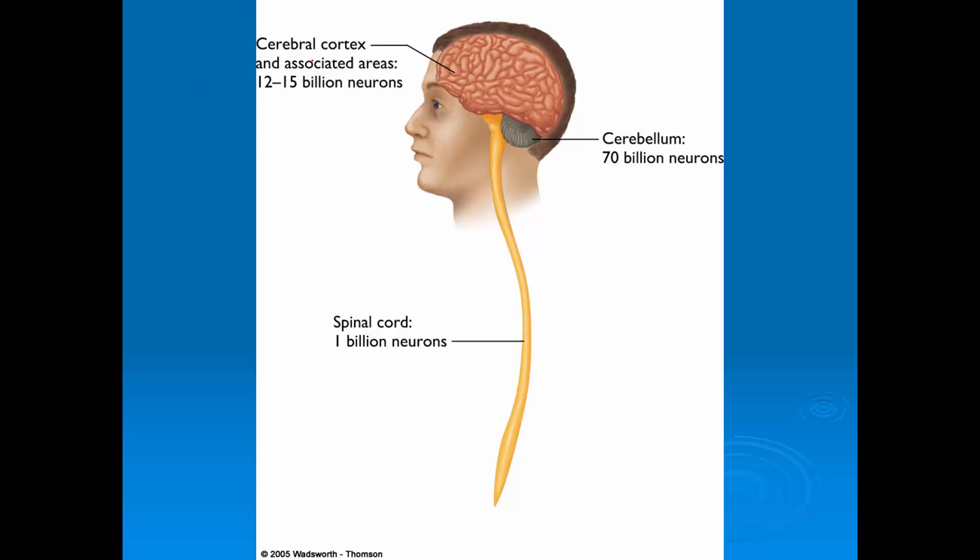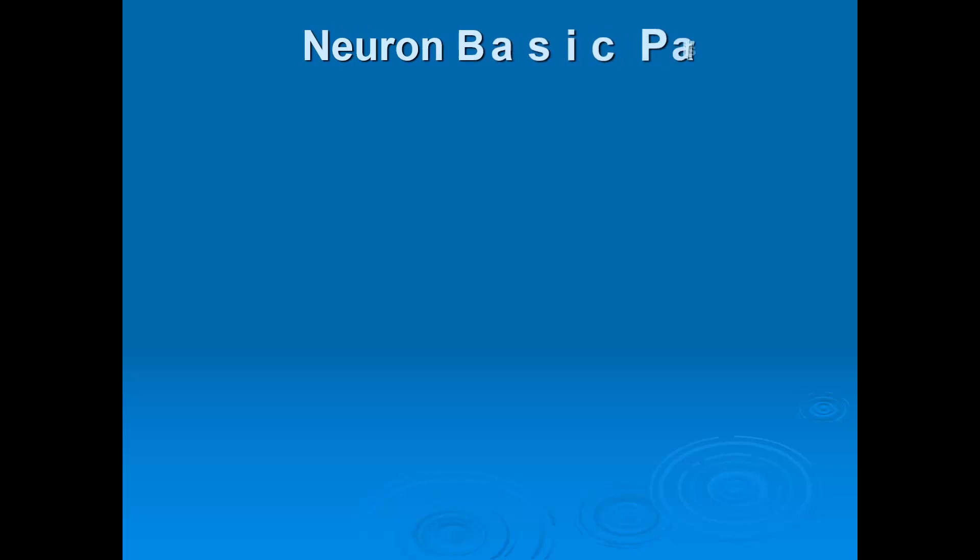In our cerebral cortex, our master part of the brain, there's about 12 to 15 billion neurons. In the cerebellum, the behind brain structure, there's about 70 billion neurons. The cerebellum helps us control things like balance, coordination, etc. And our spinal cord, which is like an extension of the brain stem, contains about 1 billion neurons. This demonstrates where these neurons are distributed throughout the central nervous system.